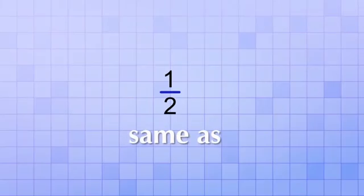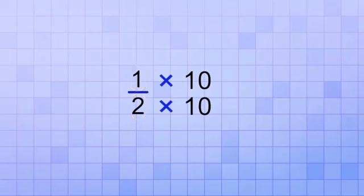Think about the fraction 1 over 2. That's the same as 1 divided by 2, right? Okay, but what if I multiplied both the top and bottom number by 10? That would give me 10 over 20, which is equivalent to 1 over 2.